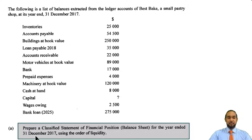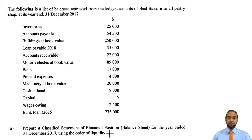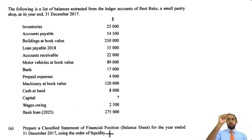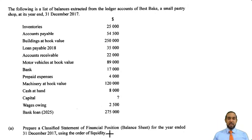It should say 'as at 31st December 2017, using the order of liquidity.' This is the first and only time, as of the recording of this video, that they've specifically asked for a balance sheet in order of liquidity. That means instead of starting with your non-current assets and then doing current assets — with stock, debtors, bank, and cash — you actually start with your current assets, with cash as your first item in the balance sheet.